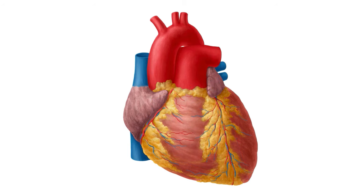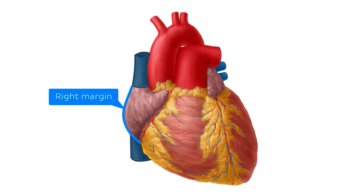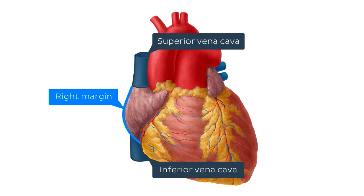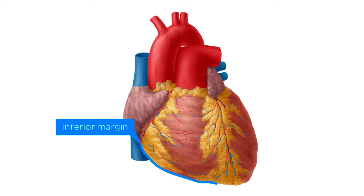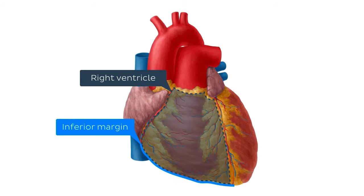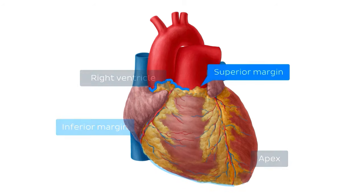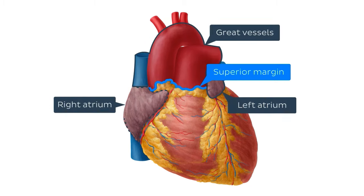In addition to knowing your surfaces, you'll need to remember also that there are four margins of the heart. The right margin is the small section between the superior and inferior vena cavae. The left is along the left ventricle, as far as the left auricle, which is this flap-like extension here. The inferior border is formed mainly by the right ventricle and meets the left border at the apex of the heart. And finally, we have the superior border, seen here, along the atria and great vessels at the top of the heart.